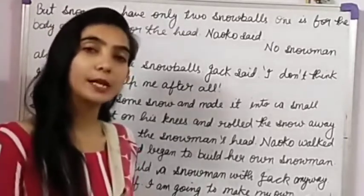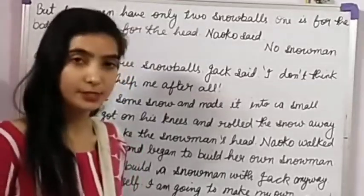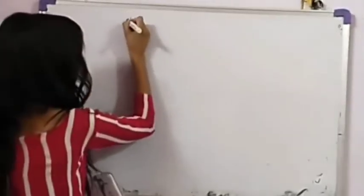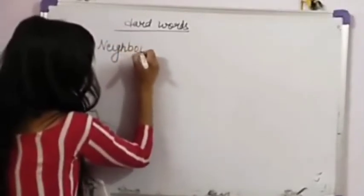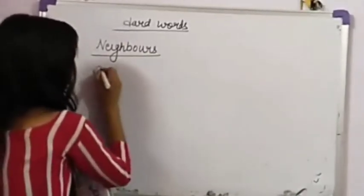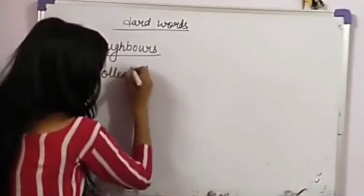So class, we covered the chapter today. The rest of the chapter we will cover in our next video. Now we are going to understand some hard words. Hard words: first is 'neighbors' — N-E-I-G-H-B-O-U-R-S. Next is 'collected' — C-O-L-L-E-C-T-E-D.